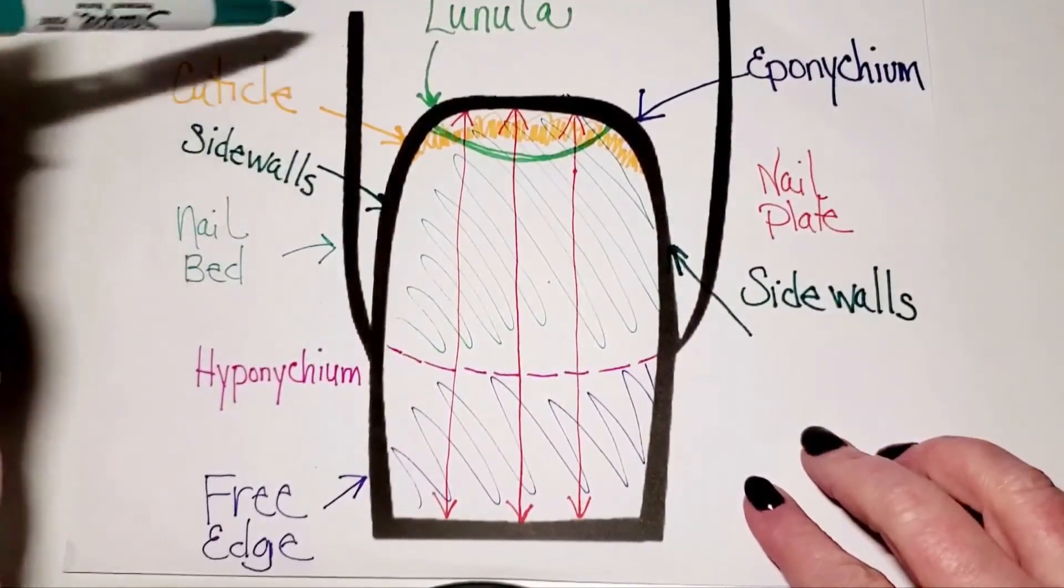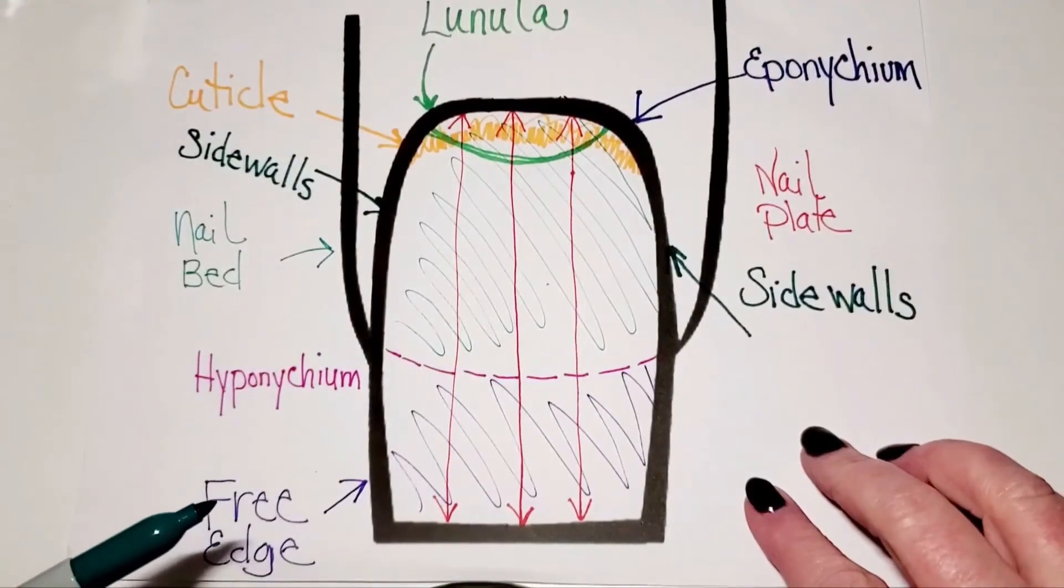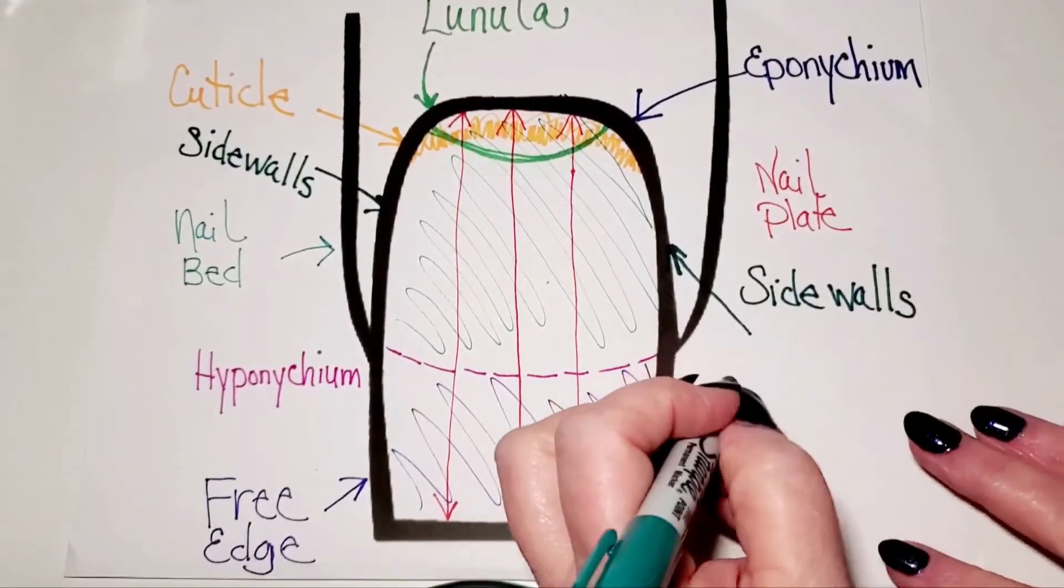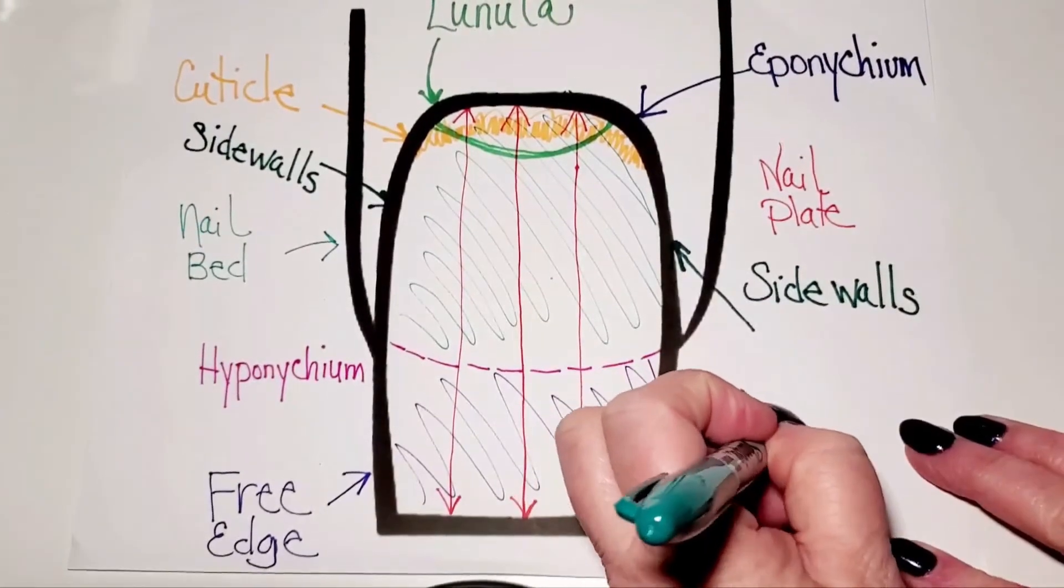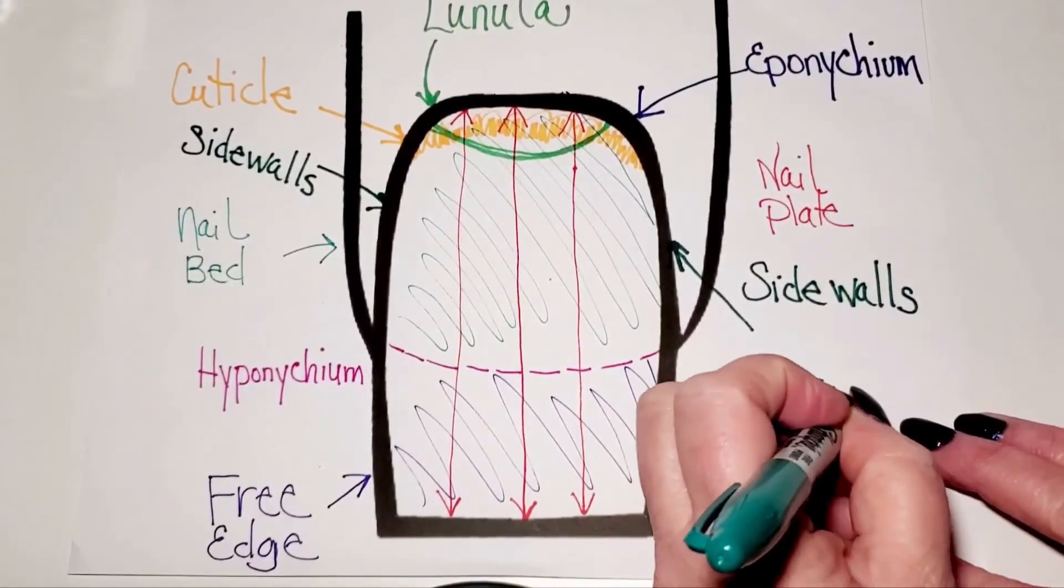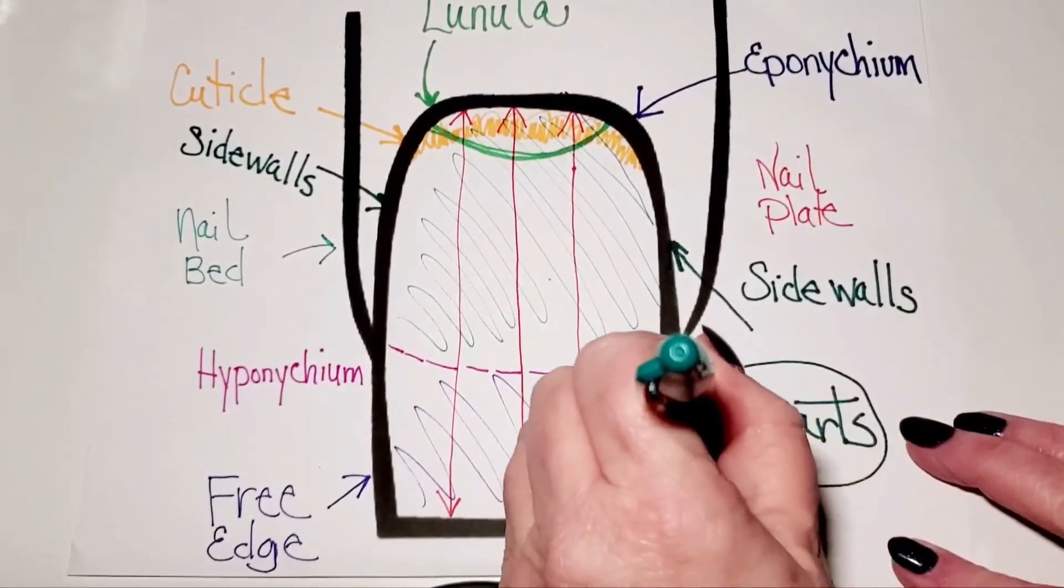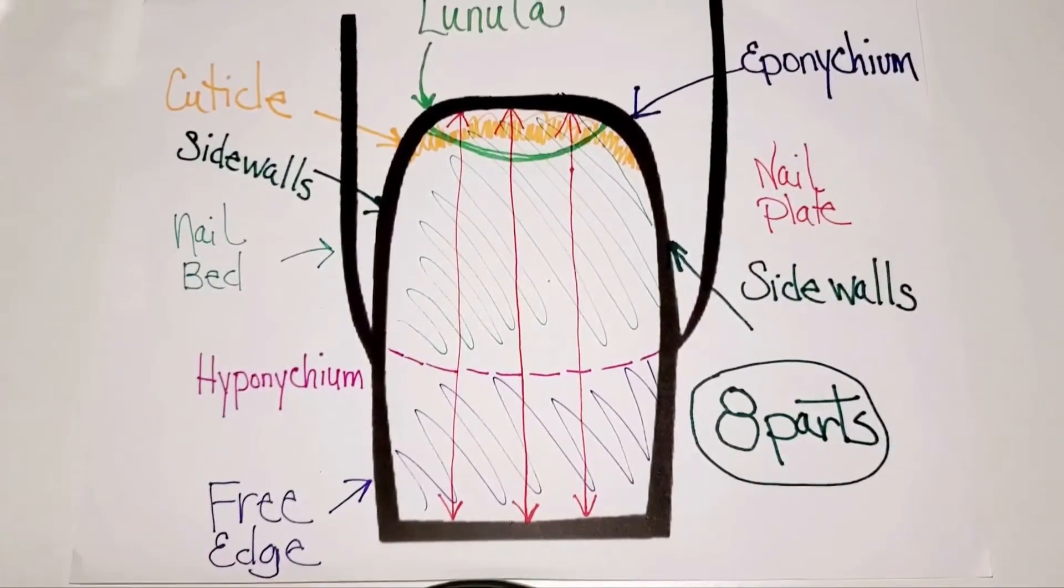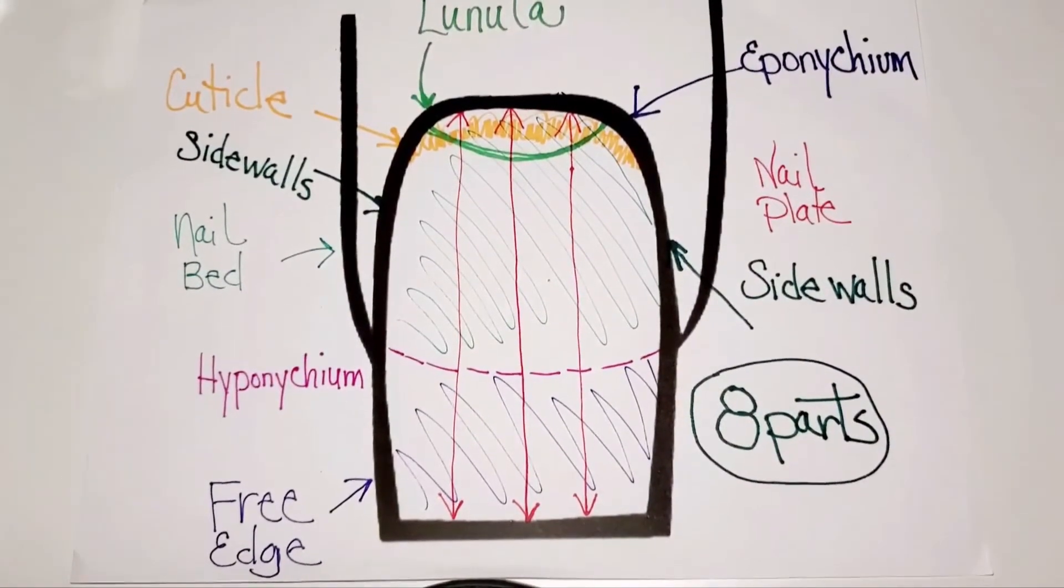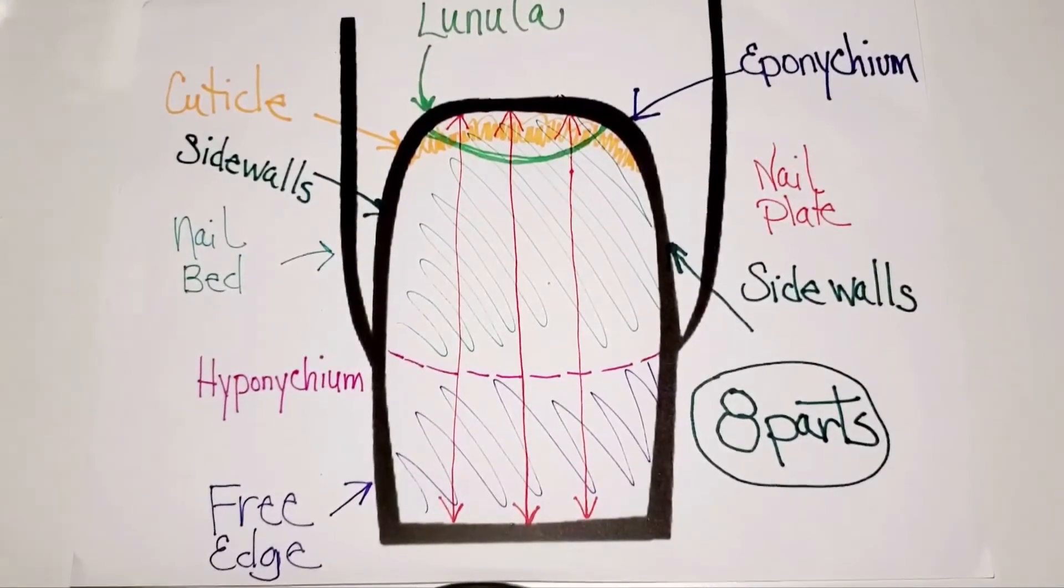So how many did we do today? One, two, three, four, five, six, seven, eight. Eight parts of the nail structure, and that, of course, is not all of them, but it gives you something to work with when it comes to memorizing them. So I'm going to stop right there, and the next video I put out, we'll go through some more of them.